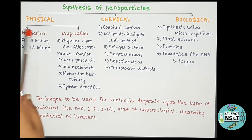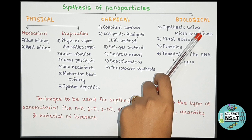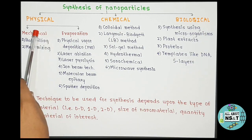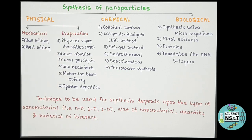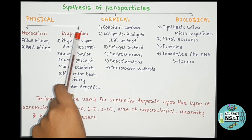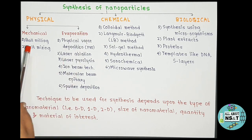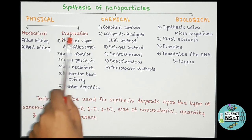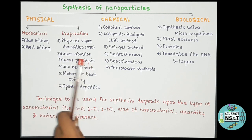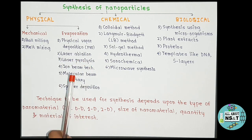Talking about the physical route, it can be divided into two methods: the mechanical method and the method using evaporation. In the mechanical method we have ball milling and melt mixing. Methods using evaporation include physical vapor deposition (PVD), laser abrasion, laser pyrolysis, ion beam technique, molecular beam epitaxy, and sputter deposition.